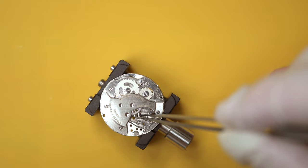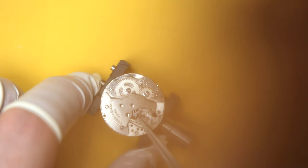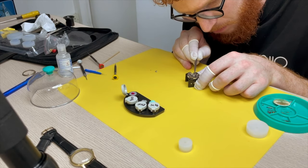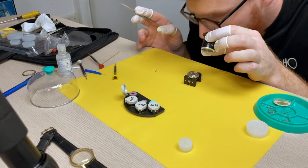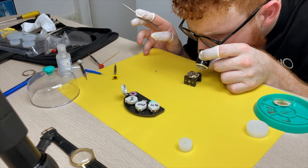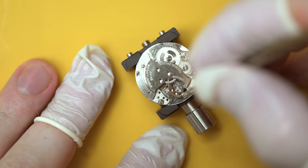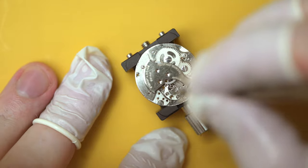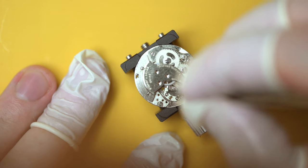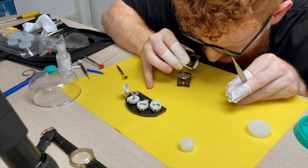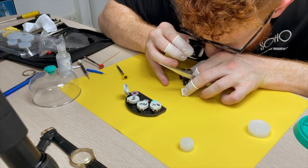So all there is left now for this side of the watch at least, we've got the pallet fork, which again, I'm going to use the loop for because this one is one of them three components that are ultra fragile. So we need to make sure that it is in place and that when we put this bridge on the pivots line up with their respective holes just to make sure we don't damage them pivots because if them pivots get damaged this watch would be a goner unless we replace the pallet fork or we repair the pallet fork.